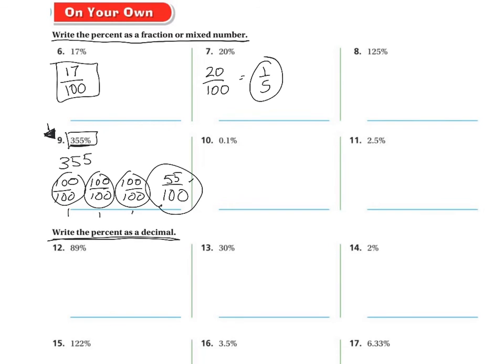The next set is writing the percent as decimals, so that's where you're going to take, and you're going to move your decimal over two spaces. 0.89. This is 2. Move it over twice, 0.02. The rest are going to be on your own or with a partner, and I'm on the carpet if you need me. Good luck.